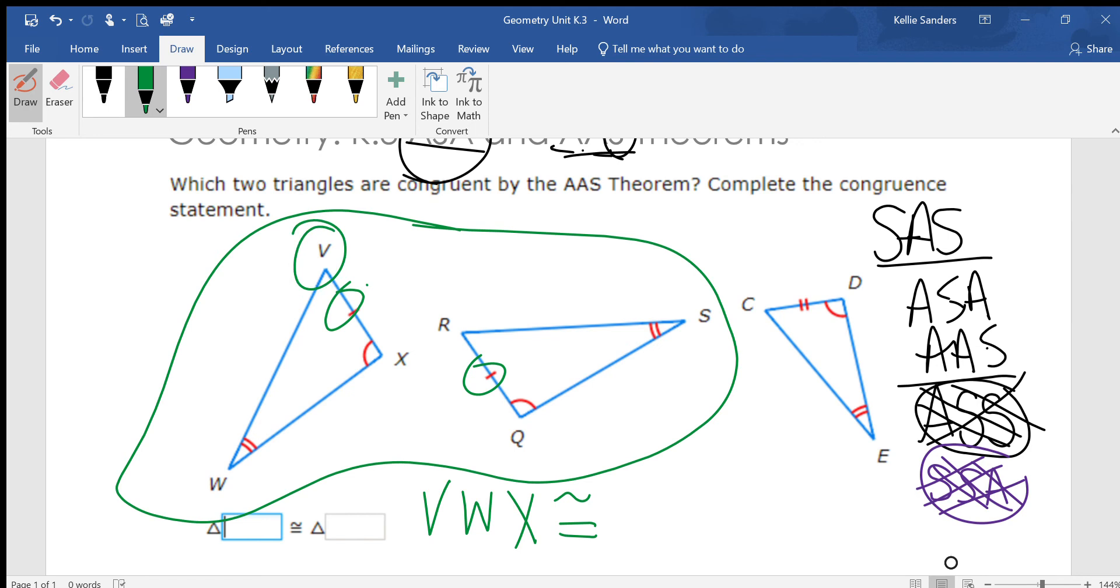And since this V is the angle that doesn't have a marker, we're going to put R first because it does not have a marker. Then we said W, which has two markers, so the next one's F, so then it would be Q.